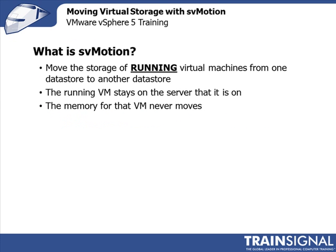So what is Storage vMotion? Basically it moves the storage, or the virtual machine disk file, of a running virtual machine from one datastore to another datastore. The virtual machine will stay on the server that it's on, unlike vMotion, and the memory for that virtual machine never moves. So really the point of Storage vMotion — SVMotion — is to move the virtual disk only. That virtual disk file could go from a local datastore to a shared SAN, from one SAN to another, or within the same SAN from one LUN to another. Storage vMotion is one of the most amazing features of vSphere.